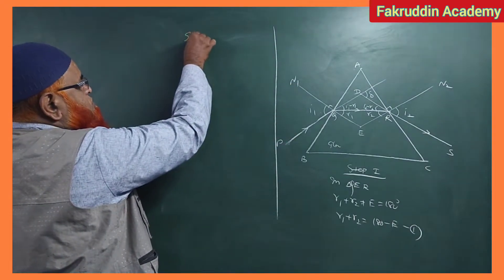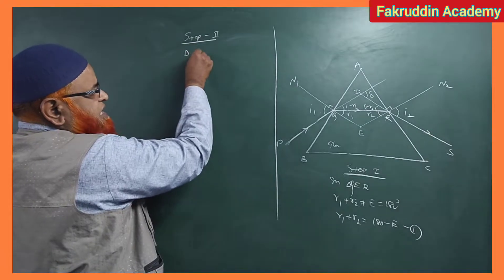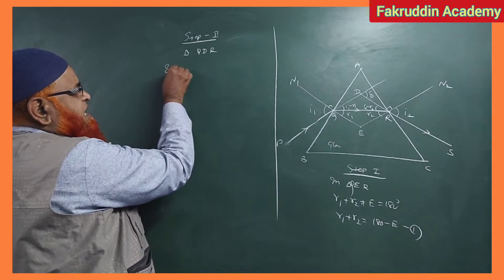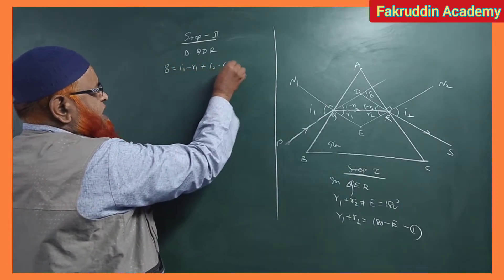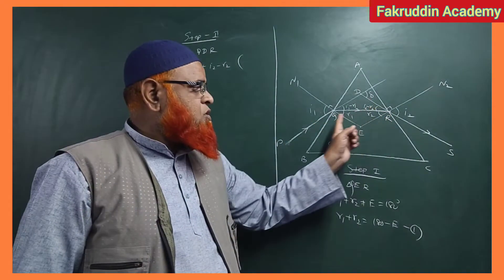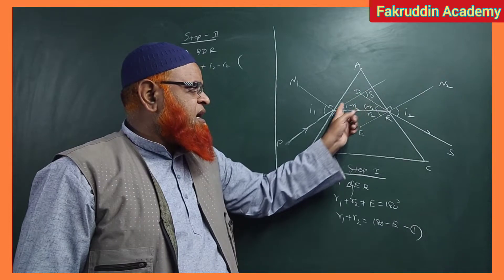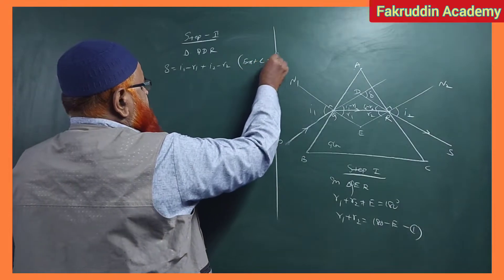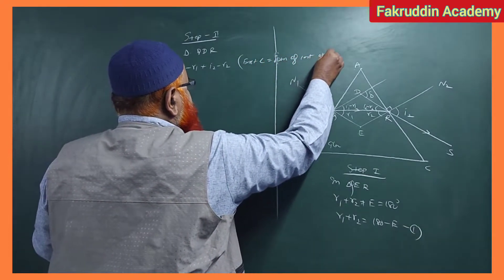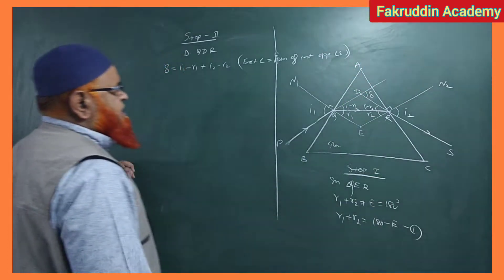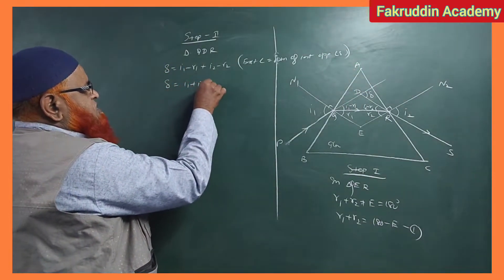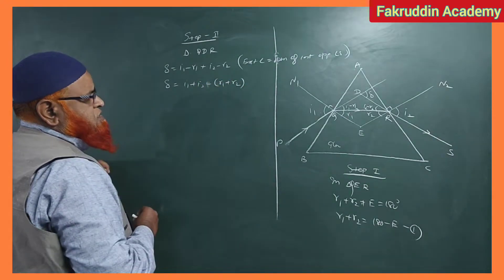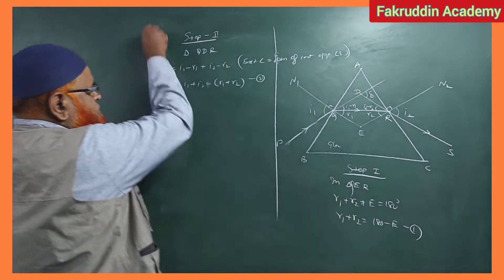Step 2: we will consider triangle QDR. In triangle QDR, delta is equal to (I1 minus R1) plus (I2 minus R2). The concept here is that the exterior angle is equal to the sum of the interior opposite angles. Then we can write I1 plus I2 is equal to delta plus R1 plus R2. Let this be equation number 2.